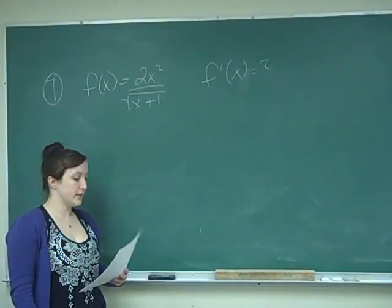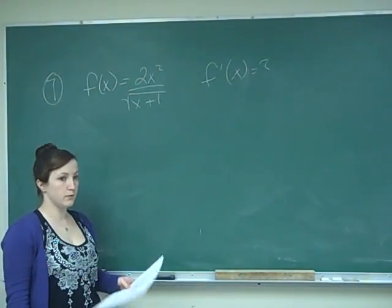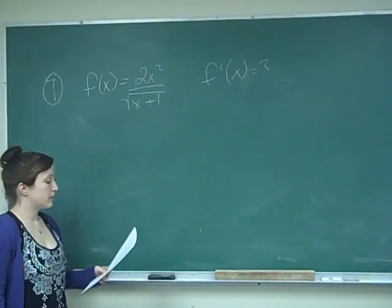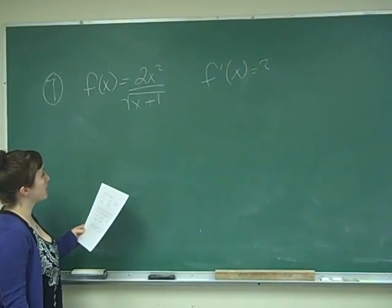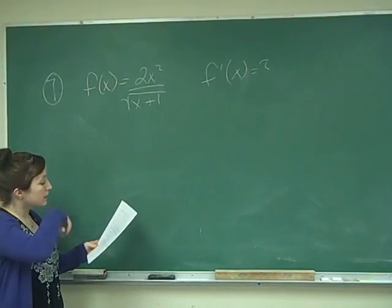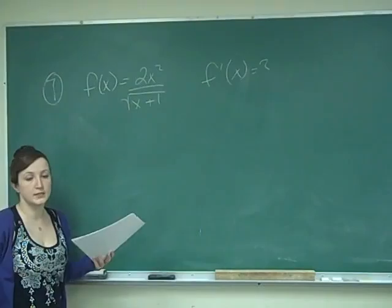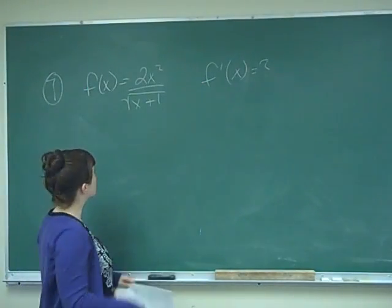This is problem number 7, and it says find f prime of x for f of x that equals 2x squared over the square root of x plus 1. So here you're really just utilizing all of your derivative rules.